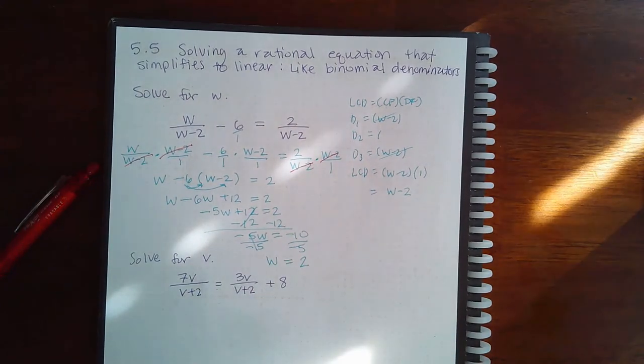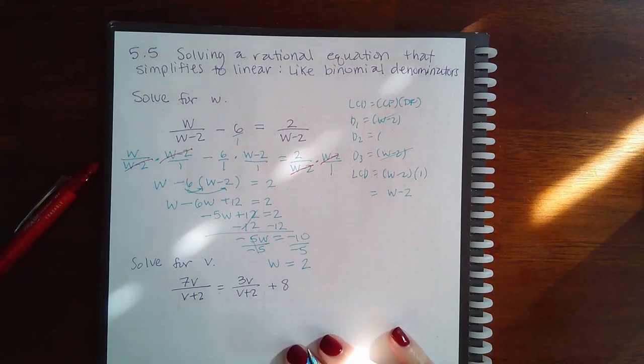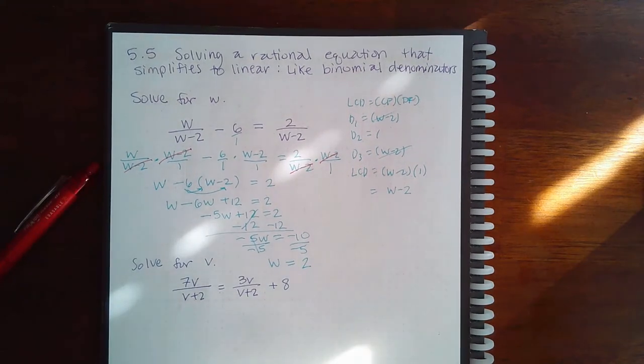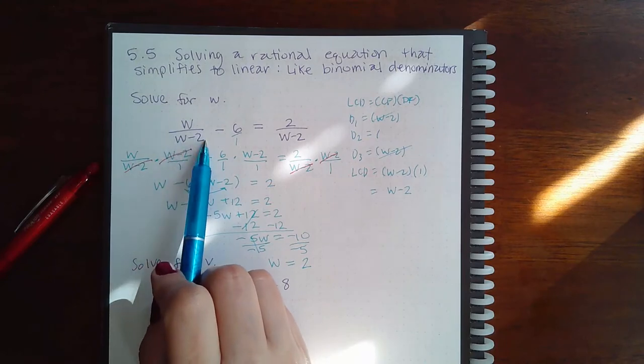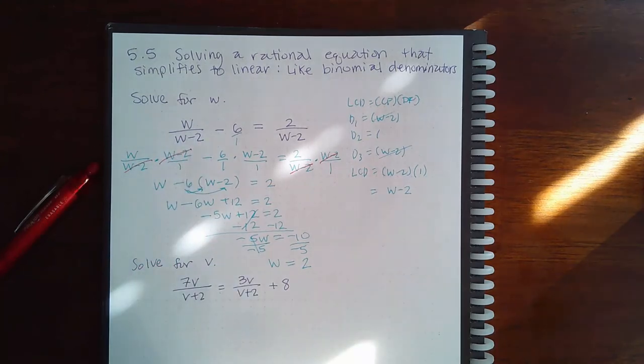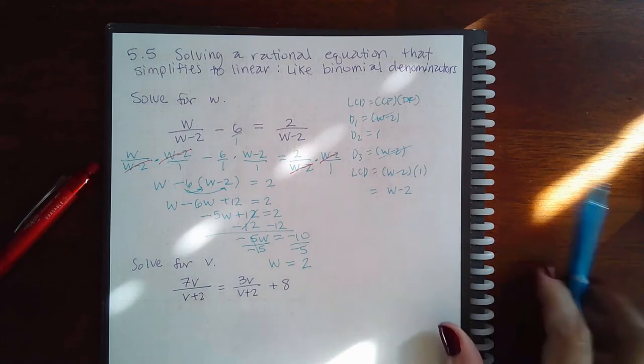Now remember, this is a potential solution. I have to make sure that this is not going to make any of my denominators 0. However, if I plug it into this denominator, the first denominator, I get 2 minus 2, which is 0.